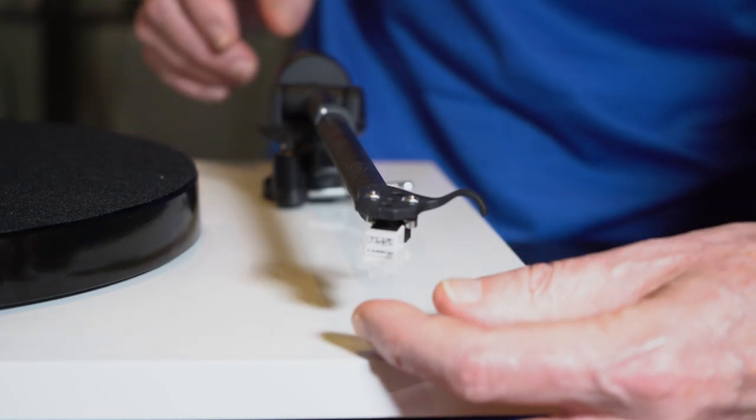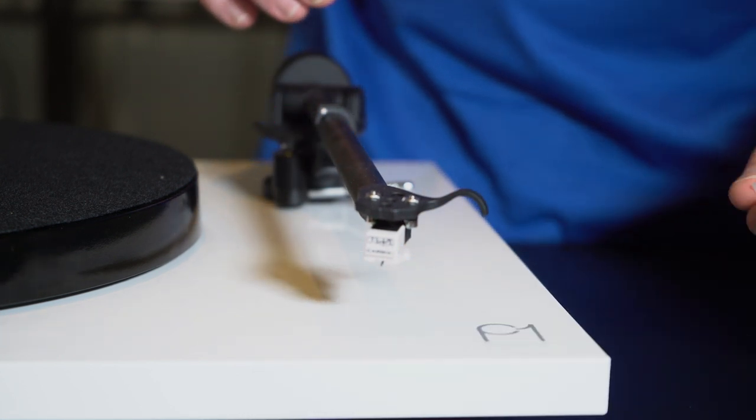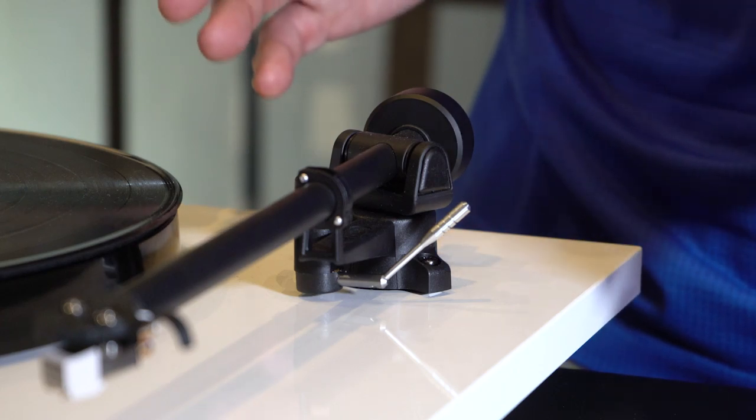The last and final step is to remove the stylus guard. So we want to just slide this straight off. Be sure to keep this because if you move your turntable, it's a great way to protect your stylus. Okay, we're ready to play a record.